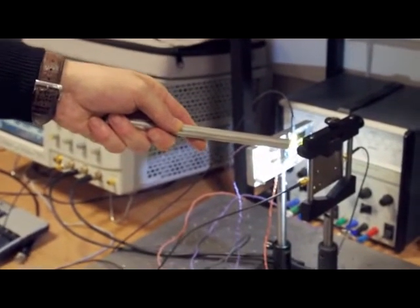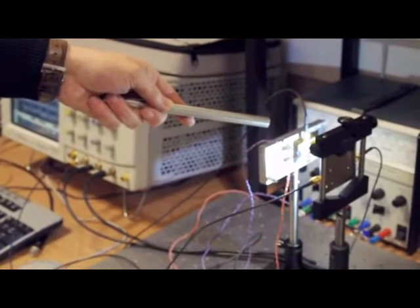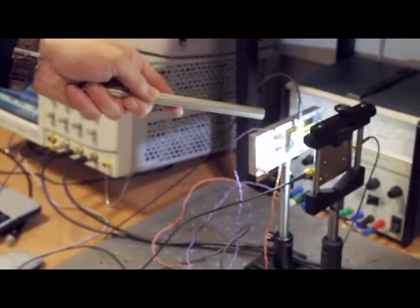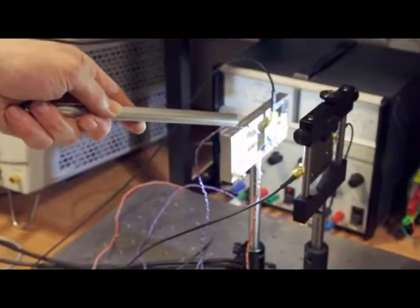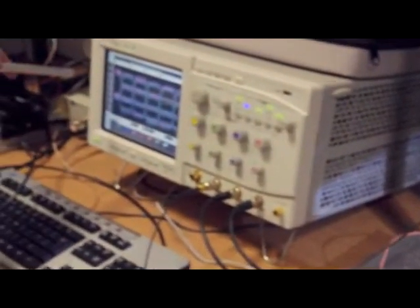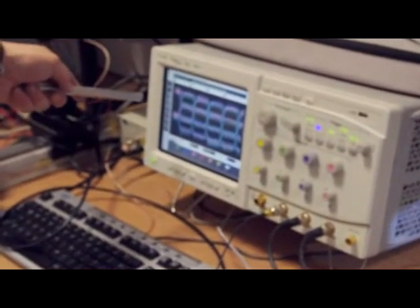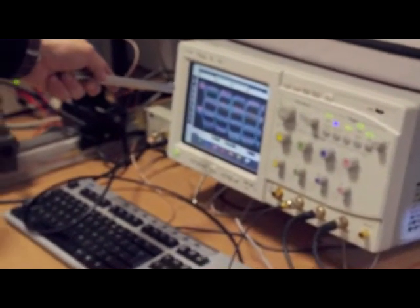The signals are collected on a single photodiode, converted to the electrical domain via a trans-impedance amplifier and fed into the oscilloscope. Here we can see the sum of the two signals as a multi-level pulse amplitude modulated signal.